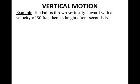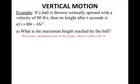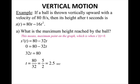Vertical motion. If a ball is thrown vertically upward with a velocity of 80 feet per second, its height after t seconds is given by a position function. We want to know the maximum height reached by the ball. The maximum occurs where the ball turns around — there will be a horizontal tangent line at that maximum height, so the derivative equals 0. I take the derivative, set it equal to 0, solve for t, and get 2.5 seconds.